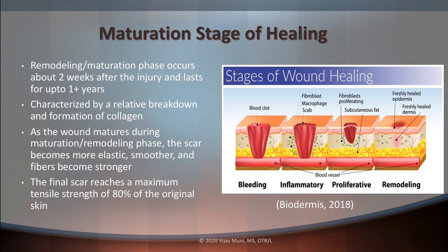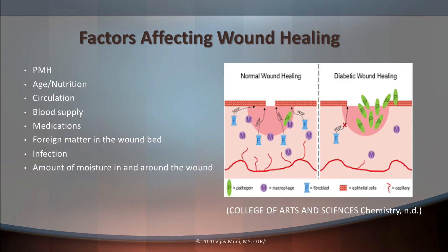When we talk about factors that affect wound healing, we always look at past medical history. Clients with diabetes or different conditions affecting wound healing tend to heal at a slower rate than someone considered healthy. As we get older, our bodies also tend to heal more slowly. Nutrition also plays a role — eating fatty, unhealthy foods can put us at risk for serious conditions.